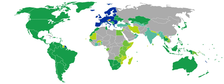Nationality law in the Republic of Austria is based on the principle of jus sanguinis. In other words, one usually acquires Austrian citizenship if a parent is Austrian, irrespective of place of birth.